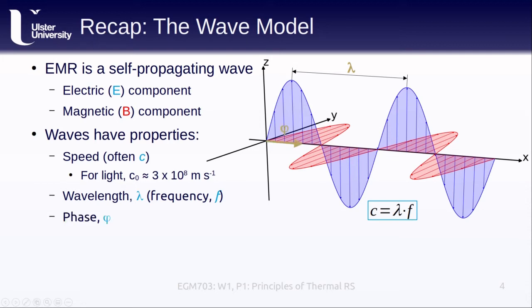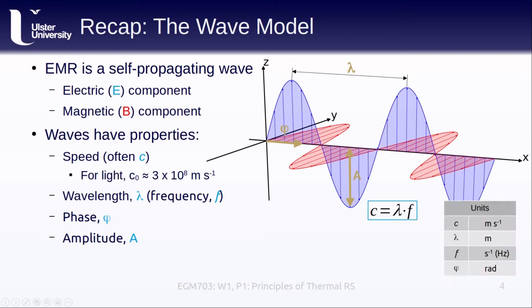Other properties of electromagnetic waves include the phase, or the fraction of a cycle, which is usually defined between 0 and 2 pi, or 0 and 360 degrees. Finally, we have the amplitude, which is the height of the peak or the depth of the trough, and this is associated with the brightness or intensity of the light. The table here lists the different components and their respective units. There is more to cover about the wave model, and we will return to this in Week 3 when we look at microwave remote sensing.